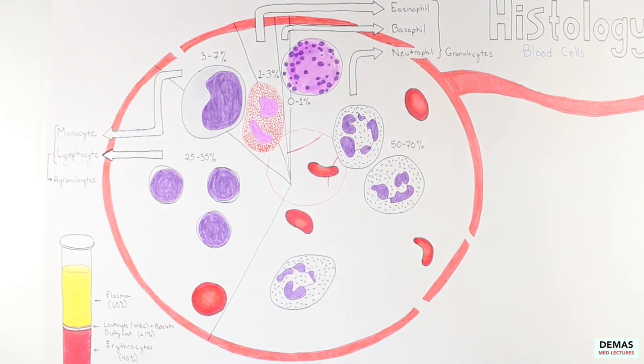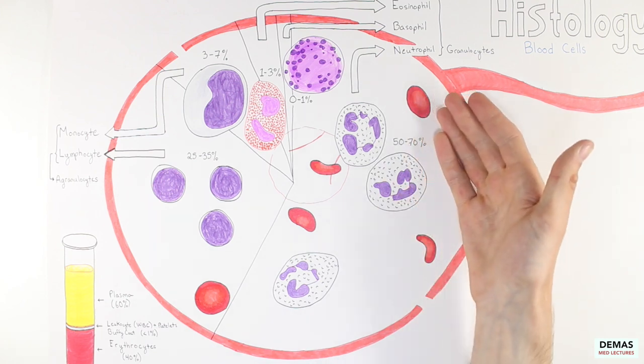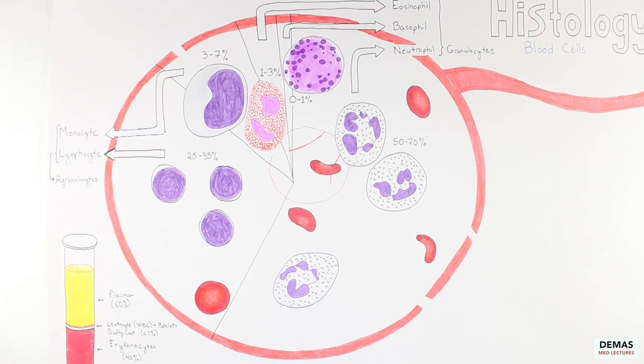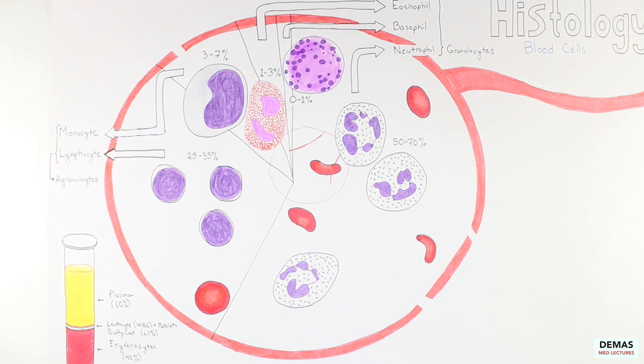Now let's step back and look at all the drawn white blood cell varieties. When drawing, I arranged the cells not only in the order of abundance, but also arranged the cells with the granulocytes on the right, including the neutrophil, basophil, and eosinophil, and the agranulocytes such as the lymphocyte and monocyte on the left. This is an important distinction and something I emphasize since I felt it is important for you to remember.